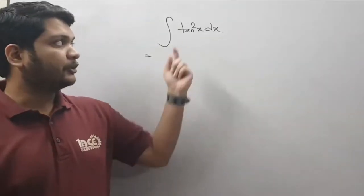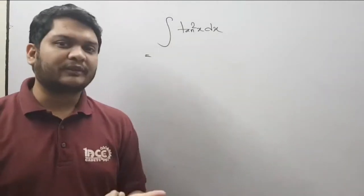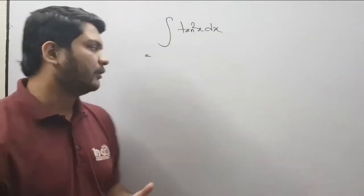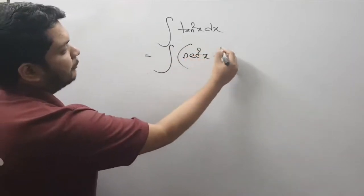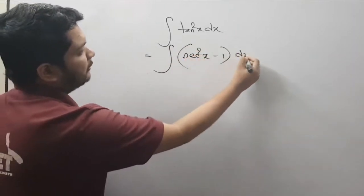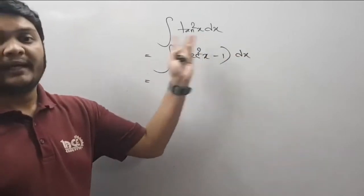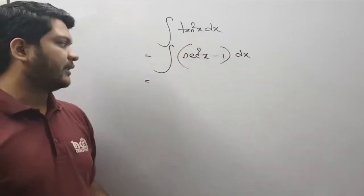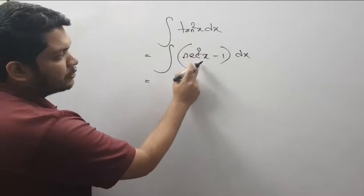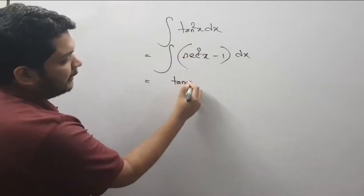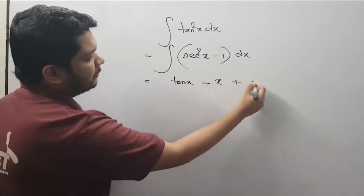We will work with sec squared x, so we will write the integration. We will write how x represents tan squared x. We substitute our integration: sec squared x minus 1, dx.